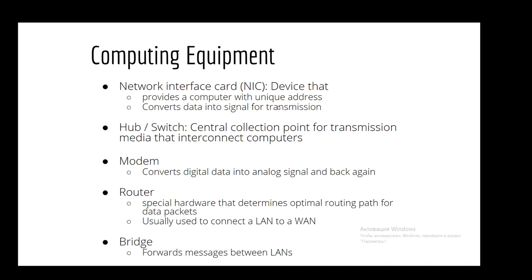Next, computing equipment. Computing equipment has network interface card, which is a device that provides computer with unique address and converts data into signal for transmission. Next, it's a hub or switch. It is a central collection point for transmission media that interconnect computers. The third, it's a modem, which converts digital data into analog signal and back again.